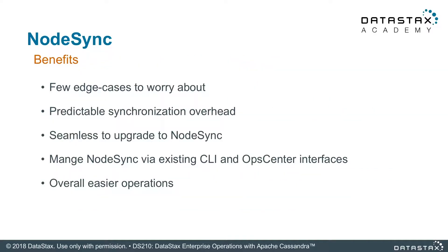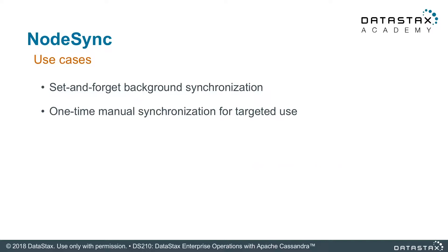Some of the benefits from a departure from repair is that there are fewer edge cases to worry about. Repair has these big overhead issues you may have to manage — when you're streaming data, you've got to be ready to stream a lot of data, and if it fails in the middle of it, you've got to be able to recover from it. So those are some of the problems NodeSync is trying to solve. It really is a set-and-forget — it just does it in the background.